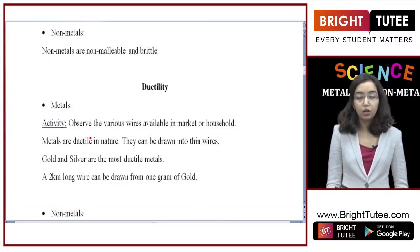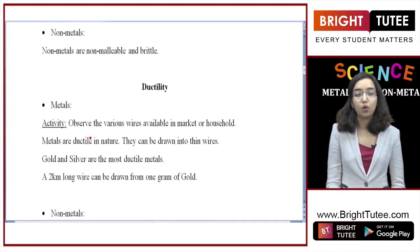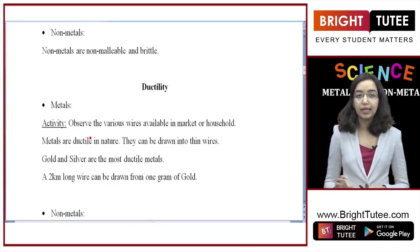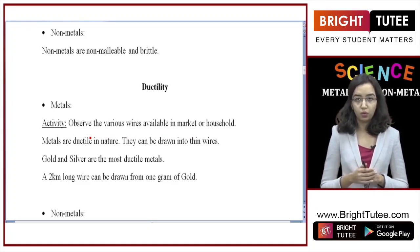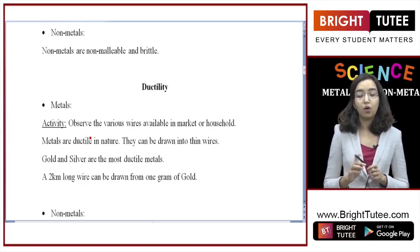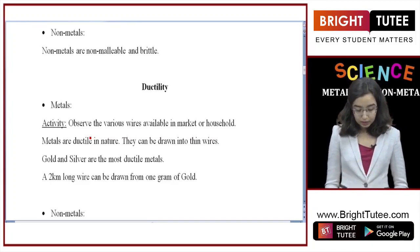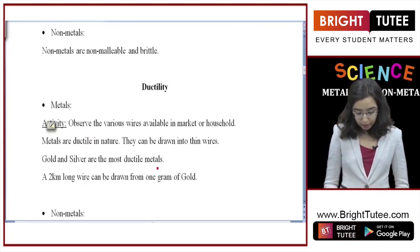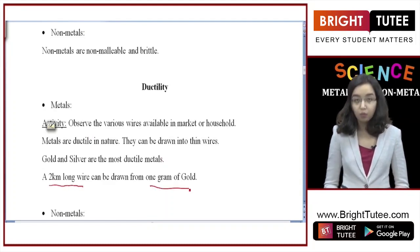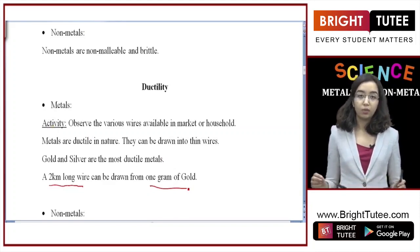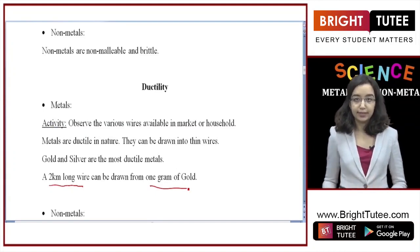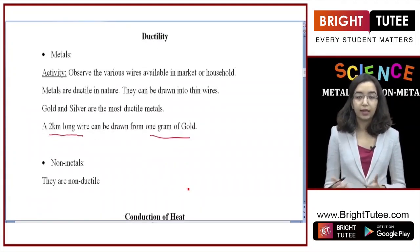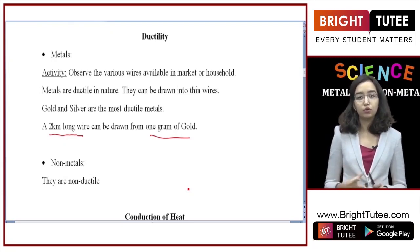The next property is ductility — the property of an element by which it can be drawn into thin wires. Observe all the wires around you in the marketplace or in your household and you will see they are all made up of metals. This is because metals are highly ductile and can be drawn into thin wires easily, which is why they are used in all electric circuits. Gold and silver are the most ductile metals. Gold is so ductile that a two-kilometer-long wire can be drawn from just one gram of gold. Nonmetals are non-ductile and because they are brittle, it is not possible to draw them into wires.